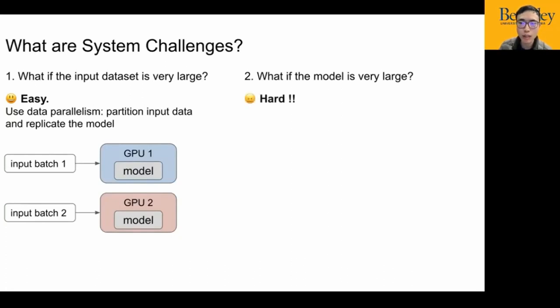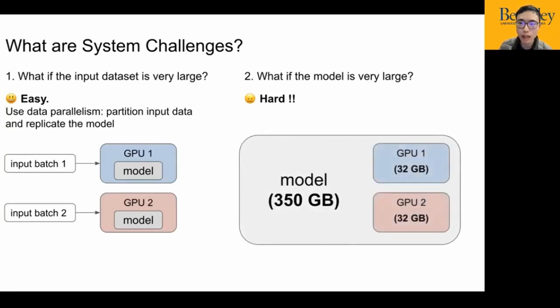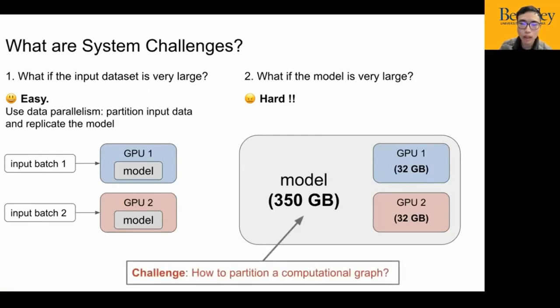Here are two GPUs. We can replicate the model on all GPUs and then feed different input batches to different GPUs to parallelize the computation. The second problem is much harder. If the model is very large, the size of the model can be much larger than the device memory capacity, as shown in this figure. We need at least dozens of GPUs to hold the model, so we cannot afford to replicate the model. Needless to say, we also have to store a lot of intermediate results, so we also have to partition the model. However, unlike the dataset, which is just a sequence of files, the model is a complicated computational graph. How to partition it is non-trivial.